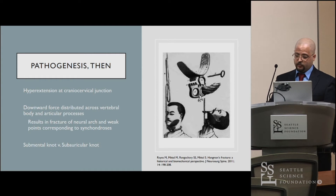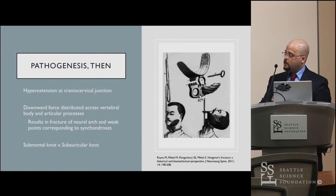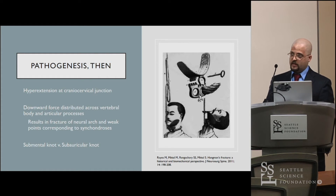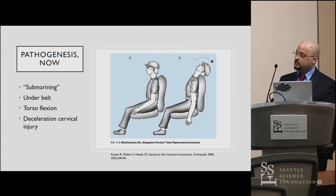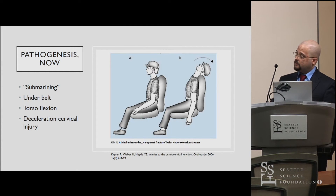This is traditionally what we think of with Hangman's Fracture — hyperextension after a fall. However, a key modern mechanism of pathogenesis is what they call submarining, where there is a slipping under the seatbelt, as shown in the image, followed by flexion of the torso, the head snapping backwards with hyperextension, and that's where your injury comes.